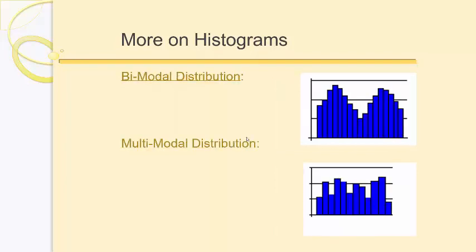There are two other types as well. We can have a bimodal distribution, which looks like two normal curves stuck together. And then something like a multimodal distribution, which just goes up and down repeatedly. These are just what we'll call them or classify them as when you see a distribution that looks like that.